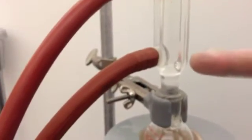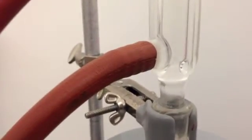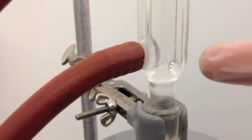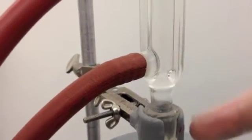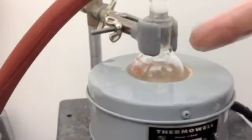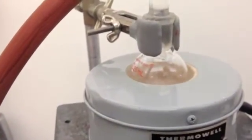And above, you can observe the reflux ring, where the vapors gather, right here, and they condense back and drop, go back to the round bottom flask.